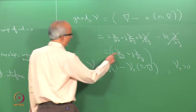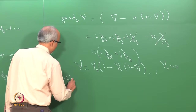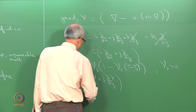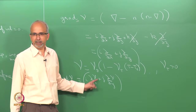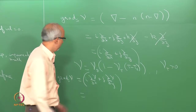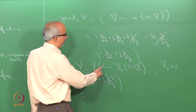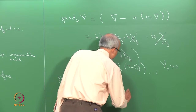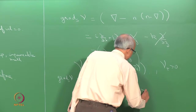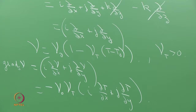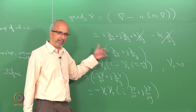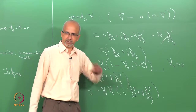So grad_s of gamma is i*(d/dx)*gamma + j*(d/dy)*gamma. Using the chain rule, d_gamma/dx = (d_gamma/dT)*(dT/dx), and d_gamma/dT = minus gamma_0*gamma_T. Therefore: grad_s(gamma) = minus gamma_0*gamma_T * (i*dT/dx + j*dT/dy). We do not yet know what dT/dx and dT/dy are — those are things we need to find out.